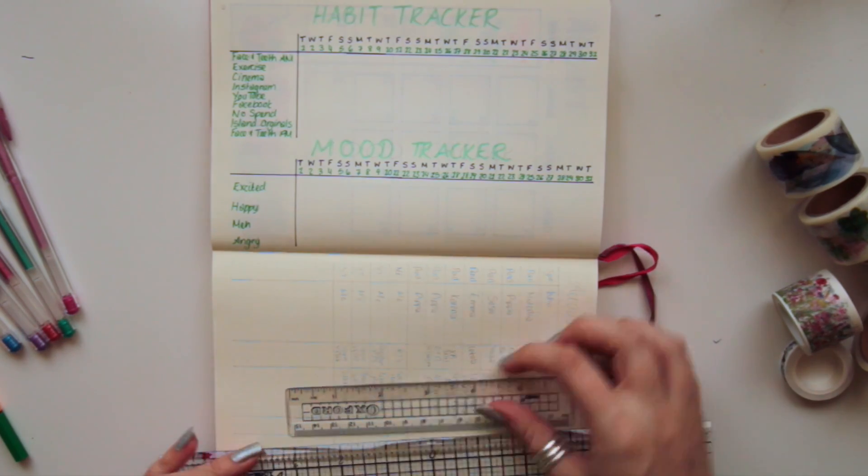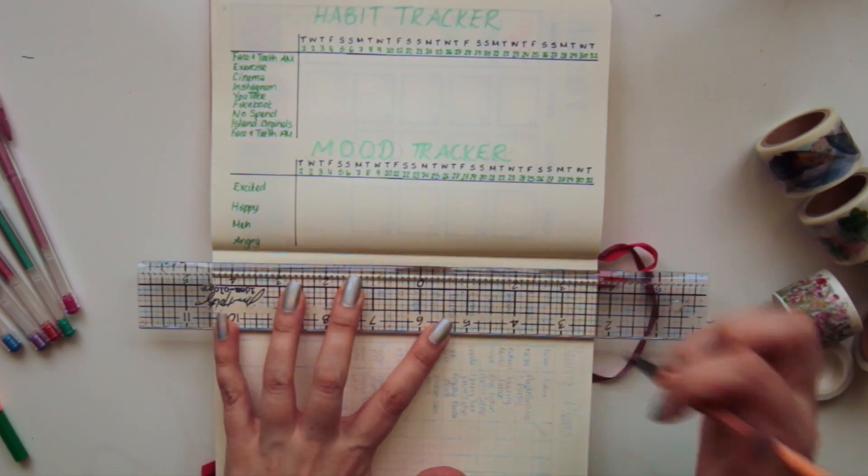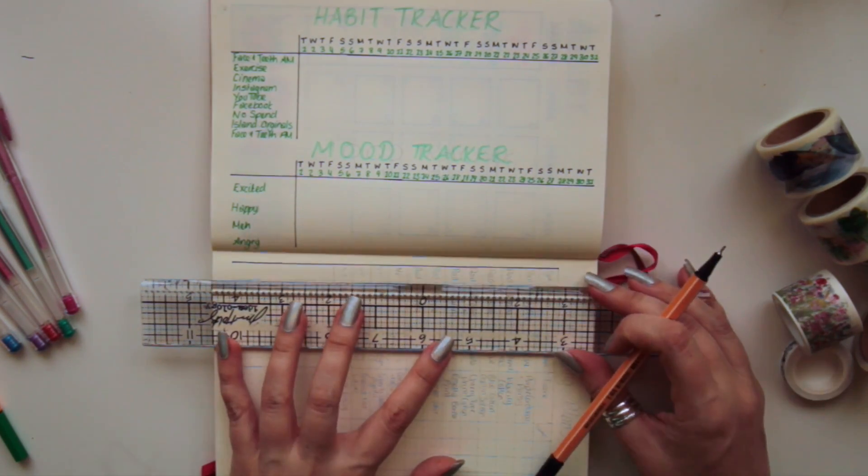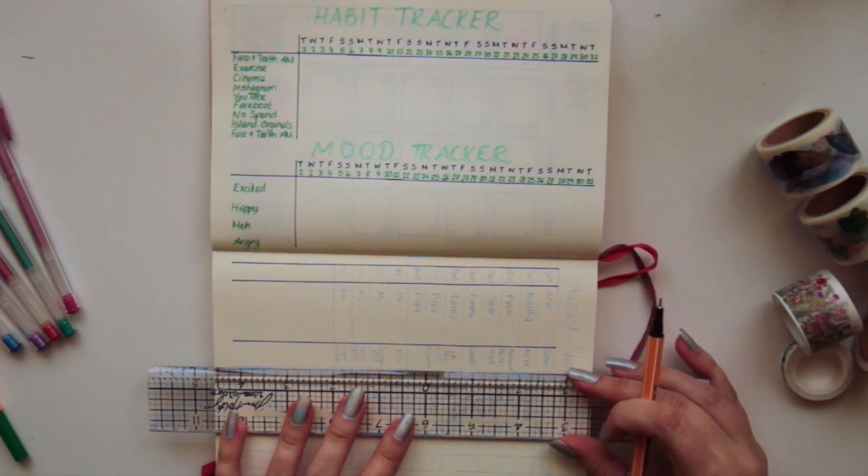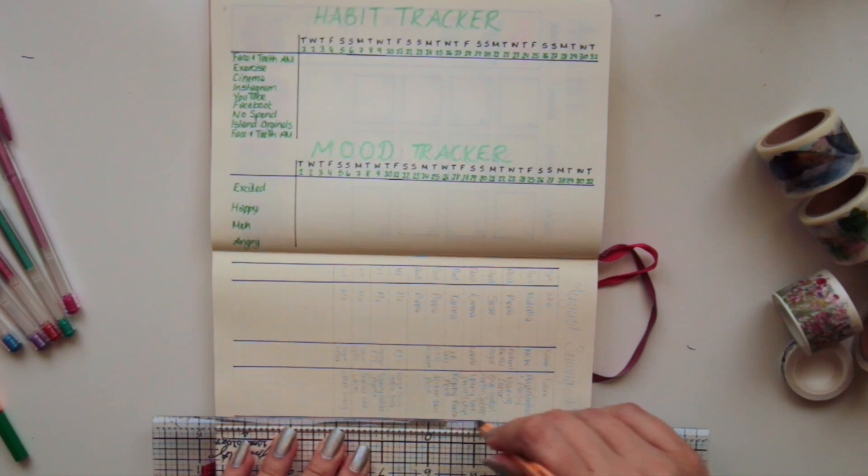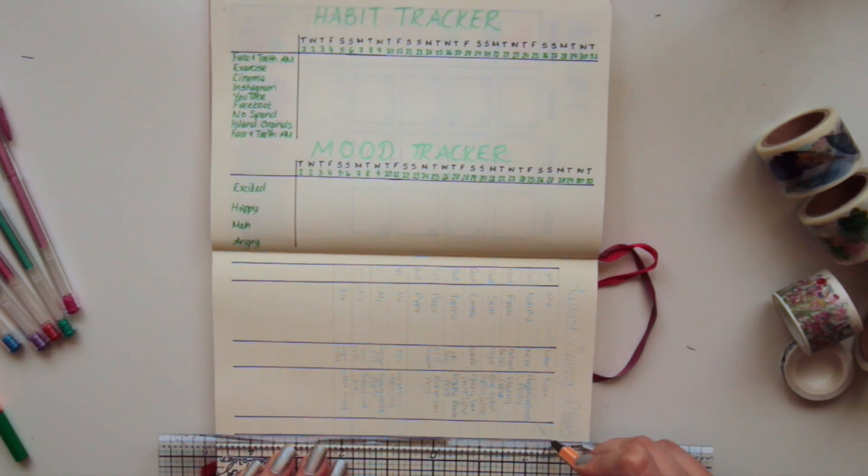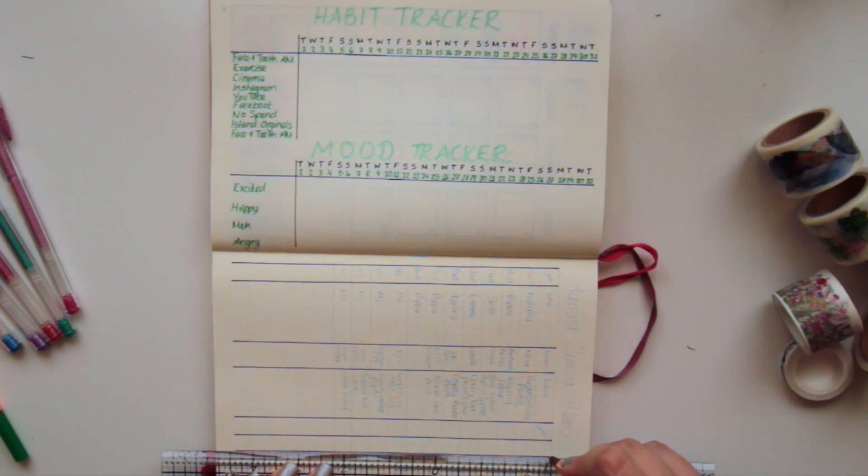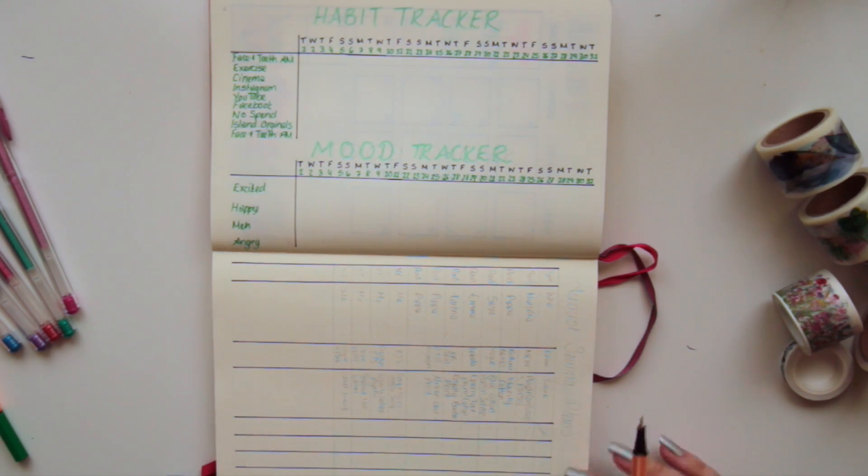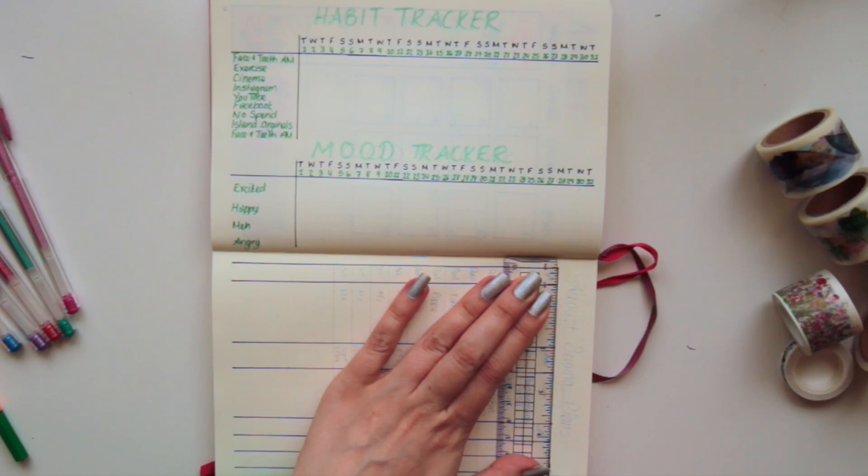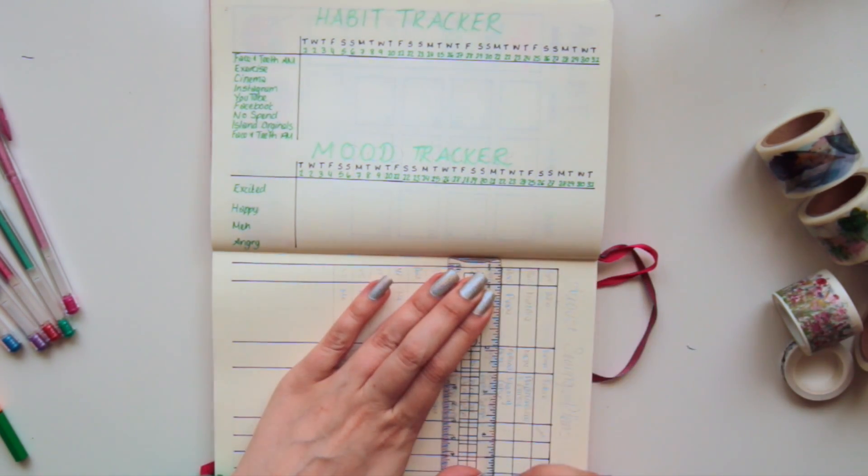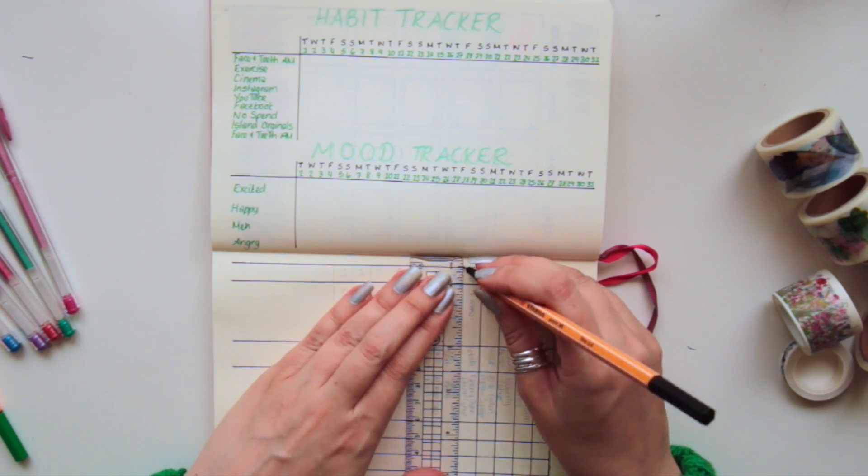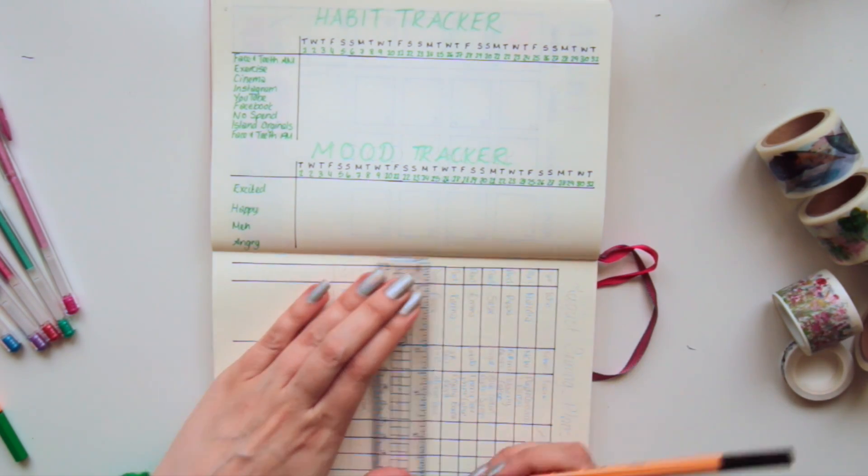This month I've dropped my expenses tracker because it wasn't really working for me. There wasn't enough room to put in all the information that I wanted to, and my accountants actually asked me to be a lot more detailed with what's going in, what's going out, and where it's coming from and what I'm spending it on. So I'm going to start another kind of diary for that which I can then send them so that my accounts are easier for them to do.